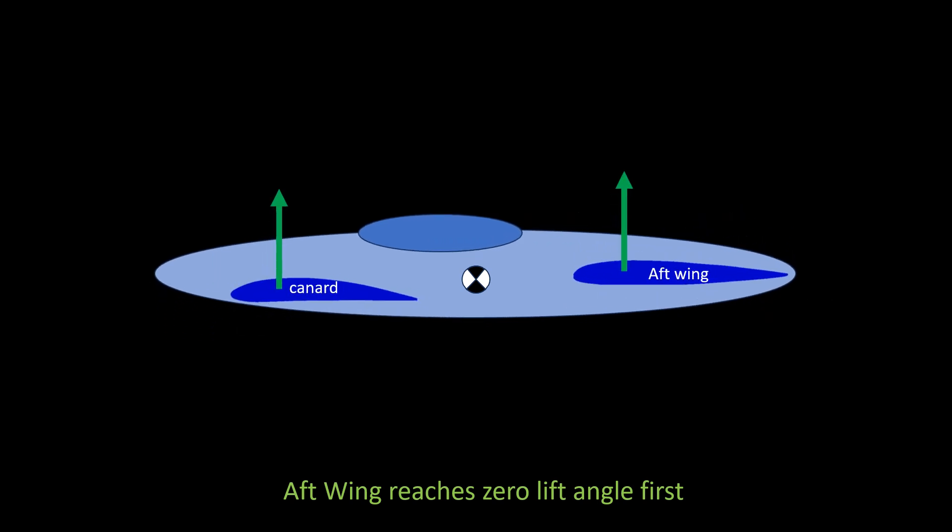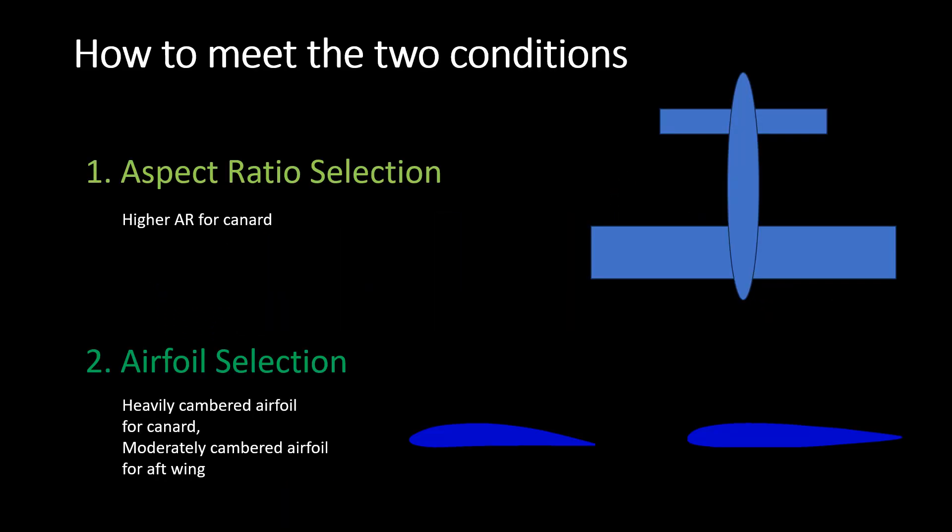These two conditions can be met as follows. One is by designing the canard with a higher aspect ratio than the main wing. And second is to use a heavily cambered airfoil for the canard and a moderately cambered airfoil for the aft wing. These two design aspects must be kept in mind while designing a canard airplane.